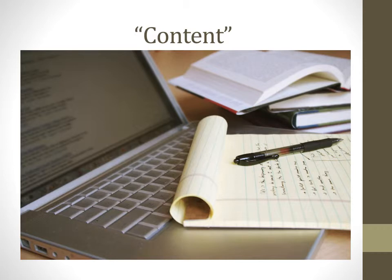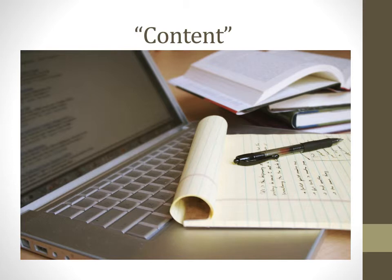Option two is a research project where you delve into a specific topic. You can take a research approach by reading several articles and combining what the field has said about a particular topic, or you can pick something practical. For example, one undergraduate student explored how to teach kids about money — what age to start and what developmental implications it has. Another topic was how to help a young child deal with grief and loss depending on their age. So the sky is the limit, but you pick a topic, do research, and discuss the developmental implications.